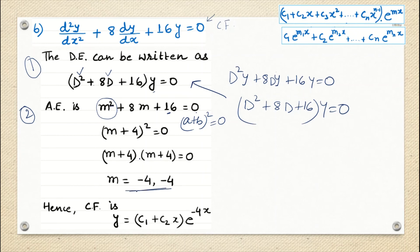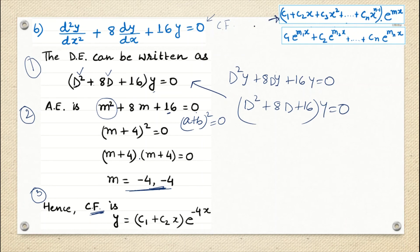Step 3: since the two roots are equal (both m = -4), we use the equal roots formula. There are two roots so we take two terms: CF = (c1 + c2·x)·e^(-4x). This is the complementary function, which is the general solution of the given differential equation.